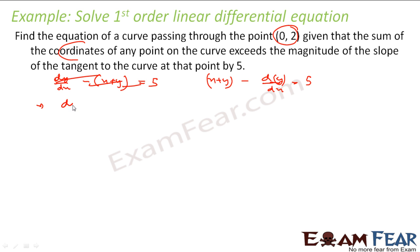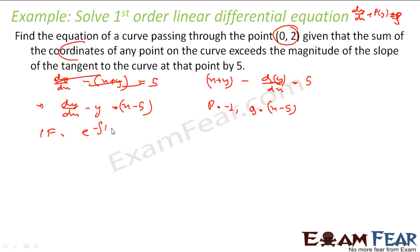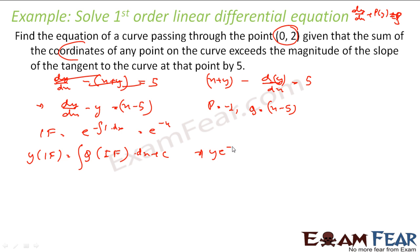If we rewrite this, it becomes dy/dx minus y equals x minus 5. Comparing with the standard form dy/dx plus py equals q, we get p equals minus 1 and q equals x minus 5. Similar to the last question. So I find the integrating factor: e to the power of minus 1 dx, that is e^(−x). The solution is y times IF equals the integral of q times IF dx plus c, giving y·e^(−x) equals the integral of (x − 5)·e^(−x) dx plus c.